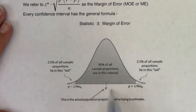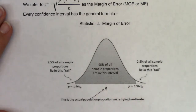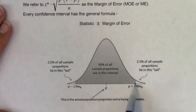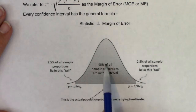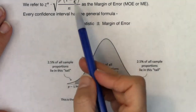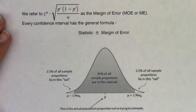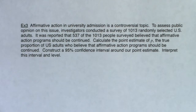Since most sample proportions fall within 1.96 standard deviations of center, we use our point estimate to get a good estimate of the population proportion. Going two standard deviations above and below — based on the standard error — captures 95% of sample proportions. Now let's flip to the next page and actually calculate one of these.